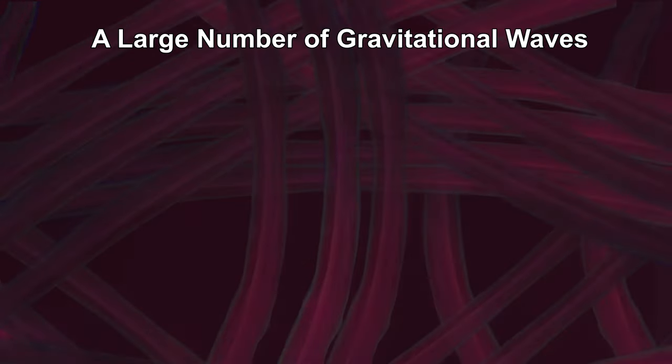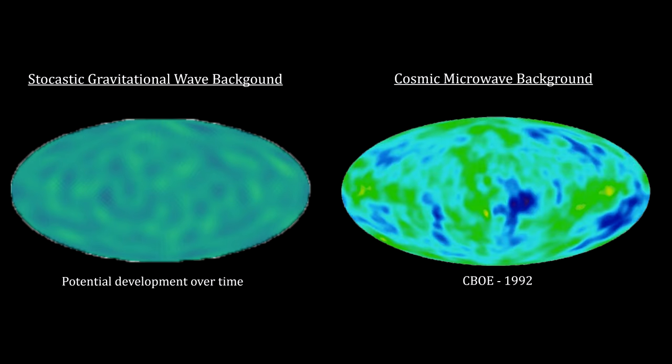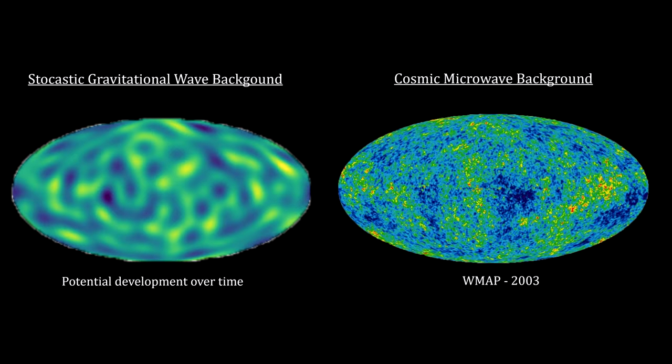This would create a background coming from all directions with a pattern that can be analyzed statistically. Such a pattern is referred to as stochastic and the radiation is referred to as the Stochastic Gravitational Wave Background, or SGWB for short.